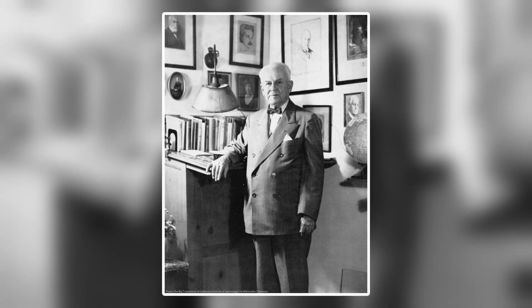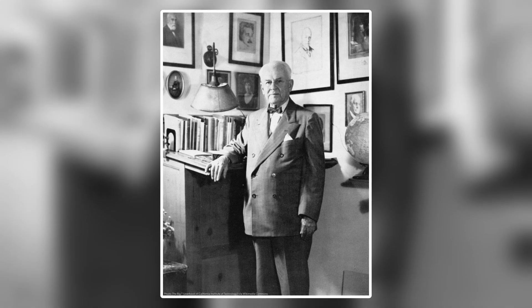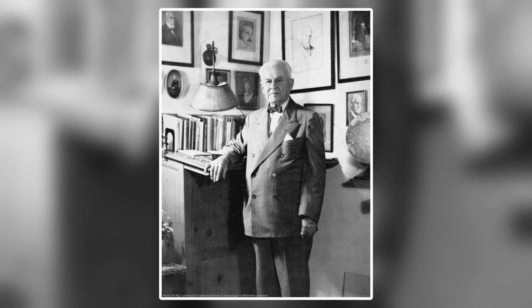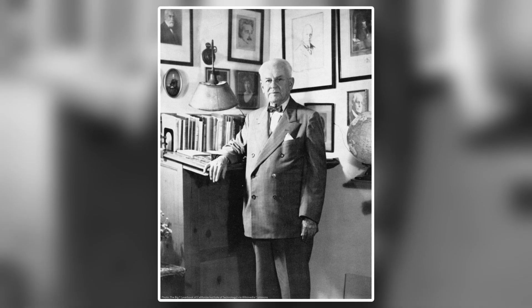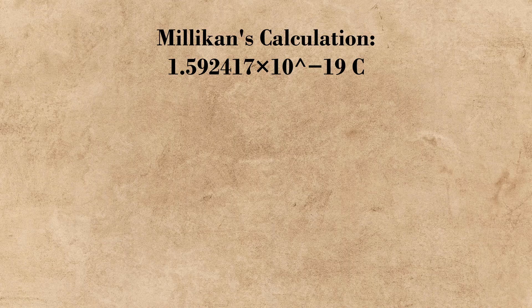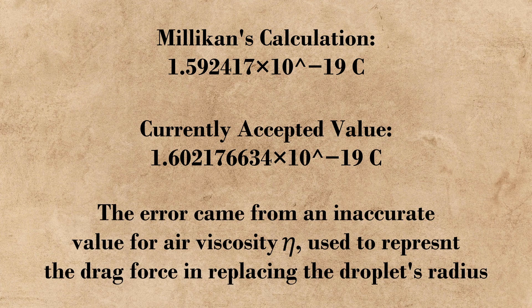Millikan's paper was praised by the scientific community, and Millikan ended up winning the Nobel Prize in 1923 for both this accomplishment and also for determining the value of Planck's constant later in 1916. Over time, the charge of the electron has been refined, and Millikan's underestimation seemed to be attributed to using an inaccurate value for the viscosity of air in the chamber in his calculations.